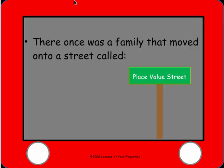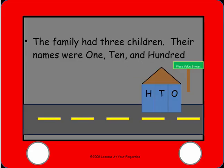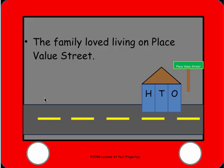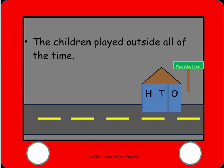There once was a family that moved onto a street called Place Value Streets. The family had three children. Their names were one, ten, and hundred. The family loved living on Place Value Streets, and the children played outside all of the time.